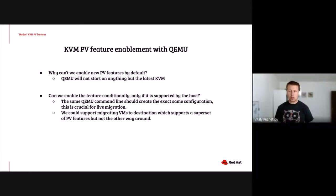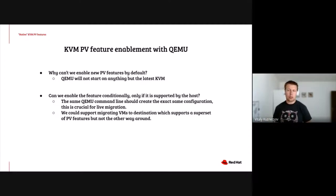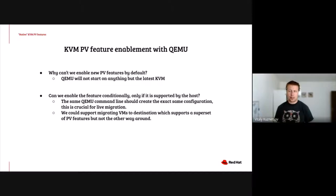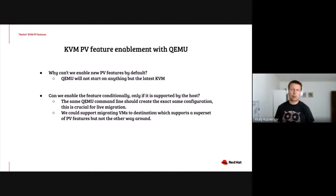Maybe we can enable features conditionally on newer hosts and avoid enabling them on old hosts. Well, there is a feature called live migration which is very important to users. When you create VMs with the same QEMU command line on two different hosts, it's expected that the VM will look exactly the same and have the same set of features. If certain features are present on the source host but not the destination, your guests may get very confused upon migration. We can support migrating to hosts that are equal or newer — with a superset of features from the source — but we cannot support migrating in the other direction.